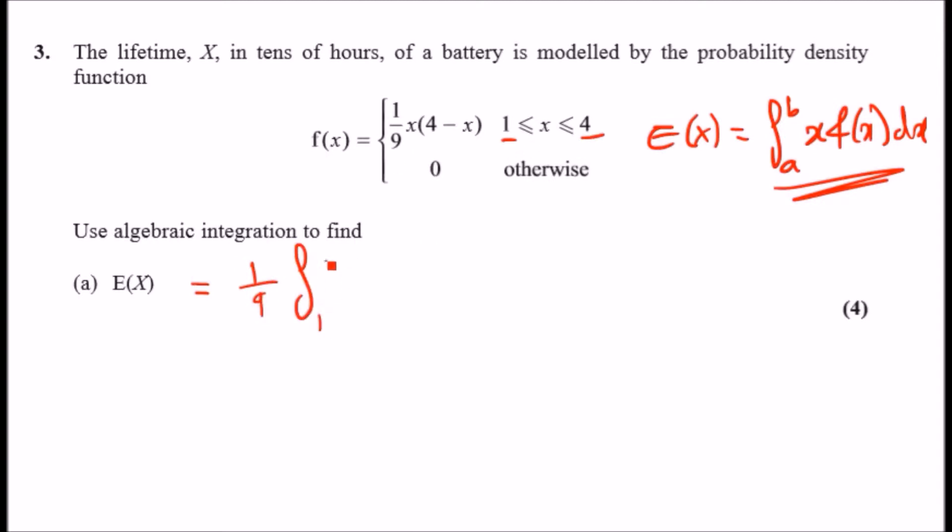Of all of this times x. So if you multiply this out, it would be 4x minus x squared. And then if you times x in front of it, you're going to get exactly 4x squared minus x cubed dx.